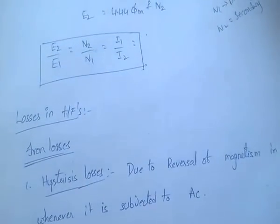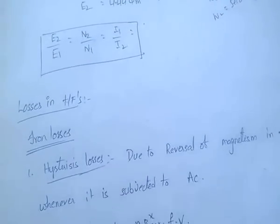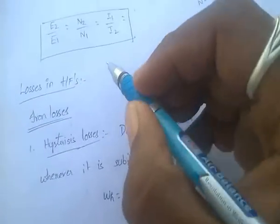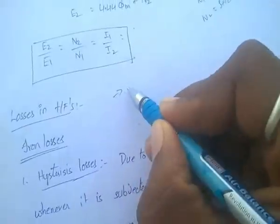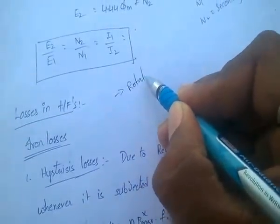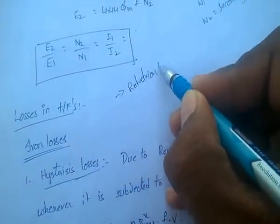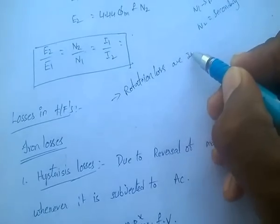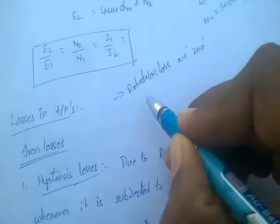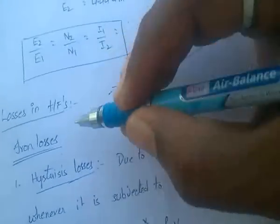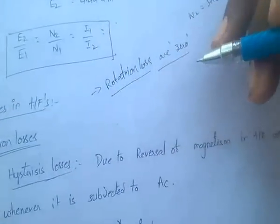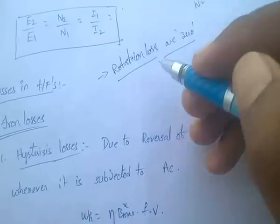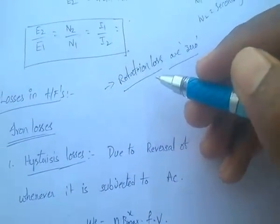Coming to losses in transformers: there are no rotational losses in transformers because there are no rotating parts. That is why rotational losses are zero — friction and windage losses are zero.